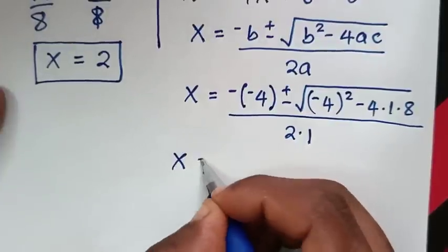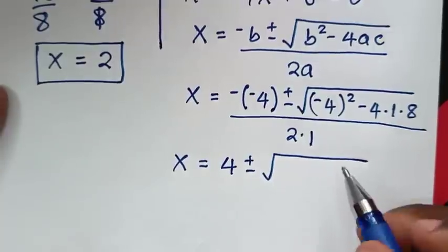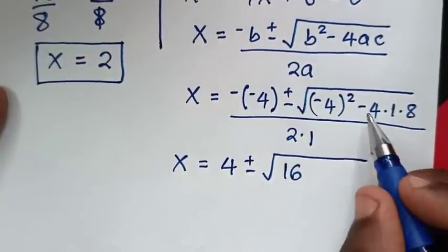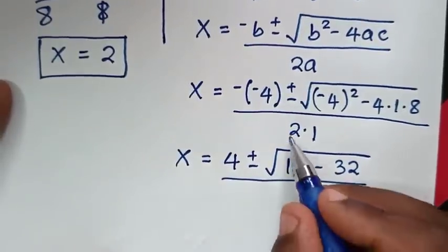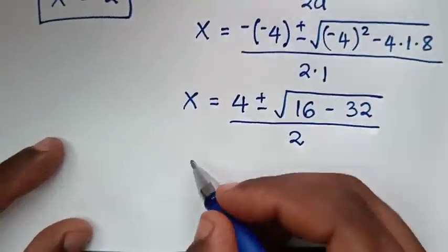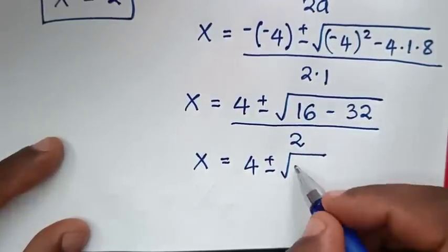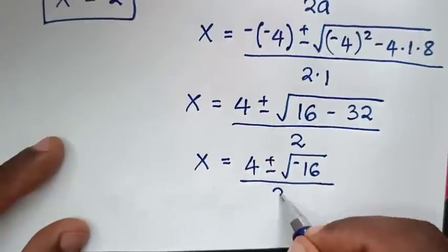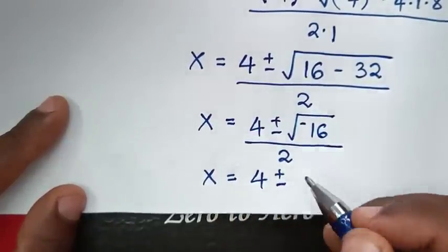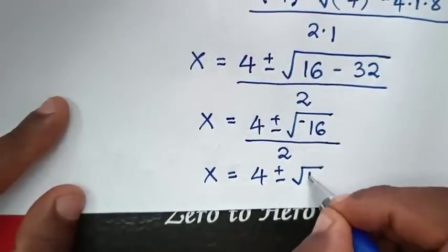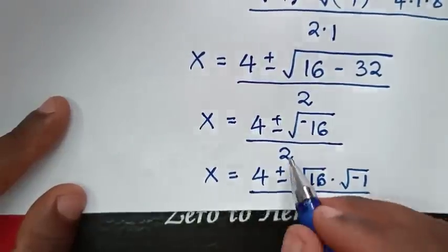Simplifying: x equals 4 plus or minus square root of 16 minus 32, over 2. That gives x equals 4 plus or minus square root of negative 16 over 2. The square root of negative 16 is the same as square root of 16 times square root of negative 1.